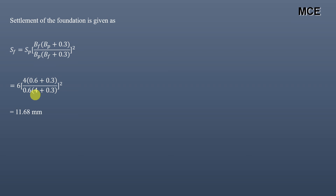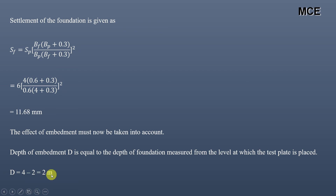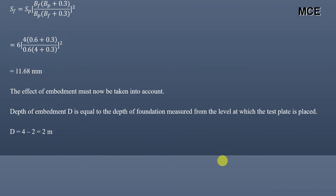This 11.68 mm is the settlement if the foundation were at the ground surface. Since our foundation is at a depth of 4 meters, we must apply a depth correction. The depth of embedment is measured from the level at which the plate load test was performed. The test was at 2 meters depth and the foundation is at 4 meters, so the depth of embedment = 4 − 2 = 2 meters.